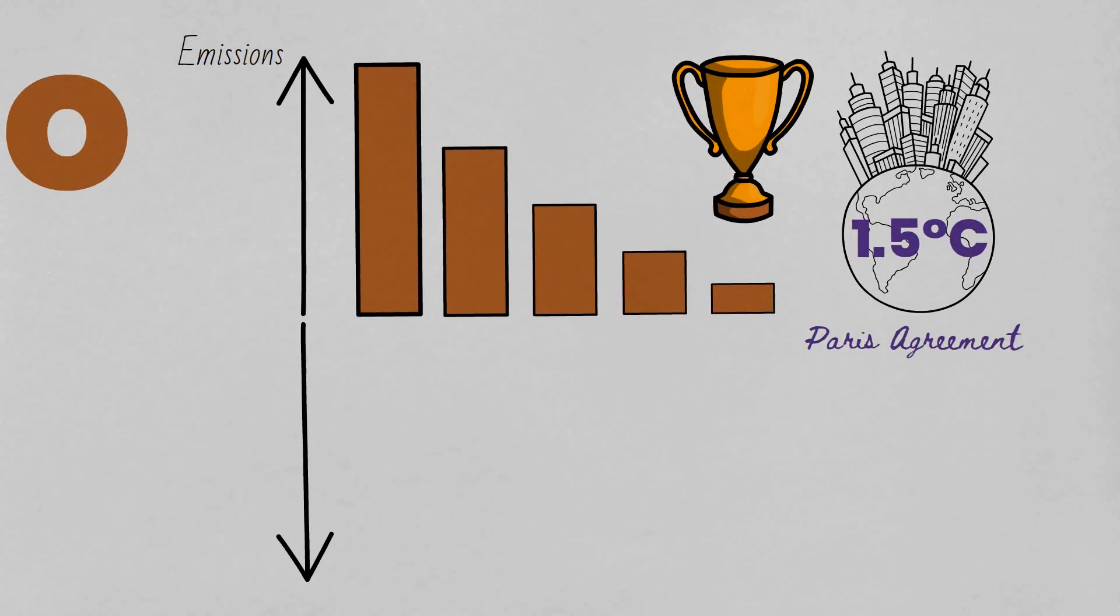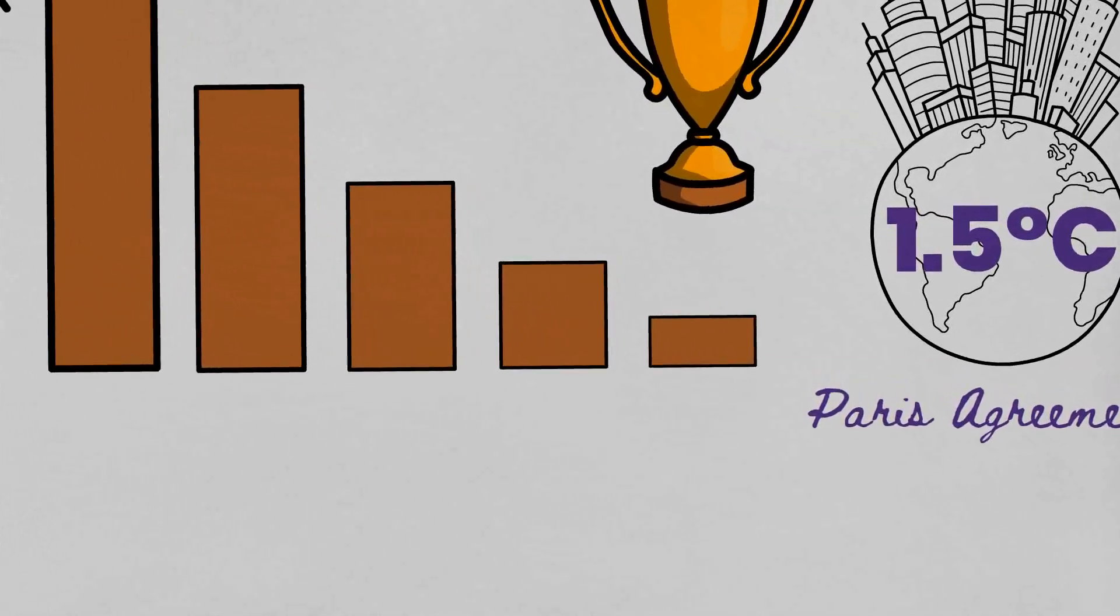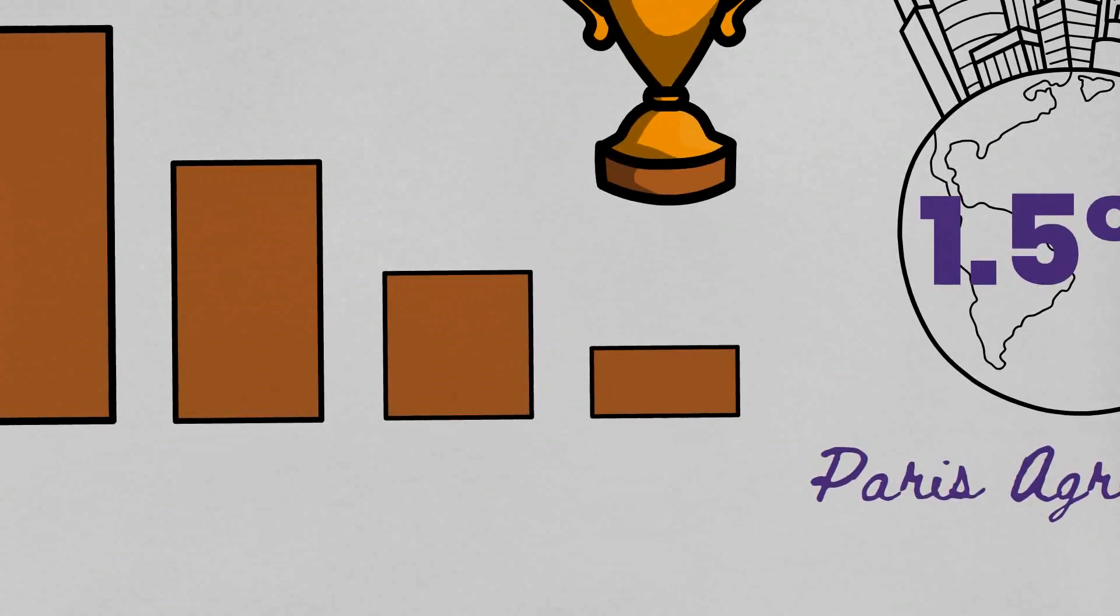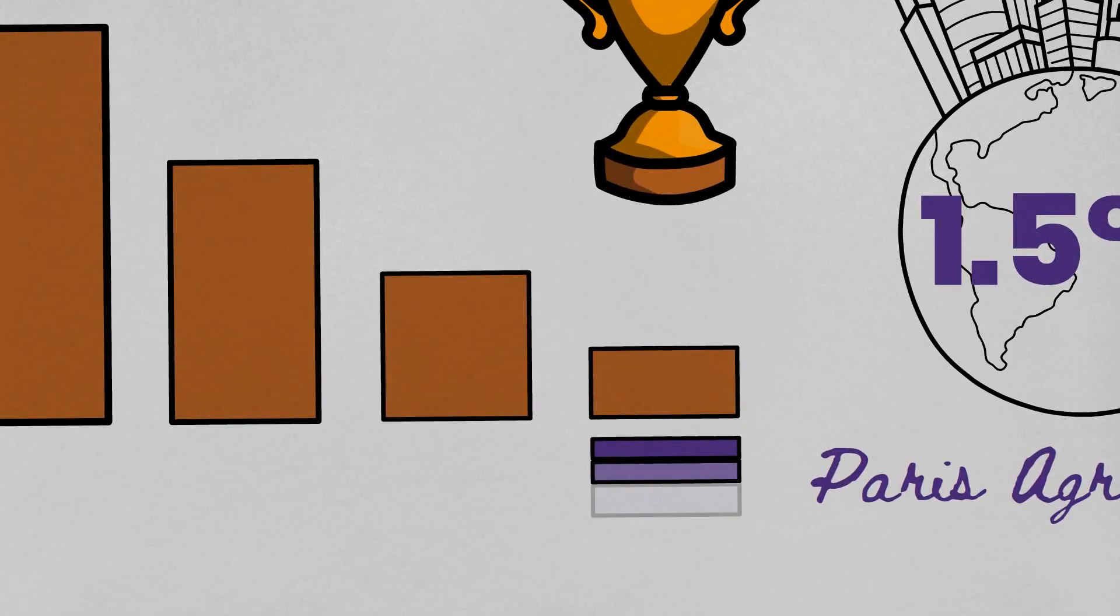Carbon credits and offsets can be considered under net zero, but only after all methods to avoid and reduce greenhouse gas emissions have been exhausted, for example via current technological limitations.